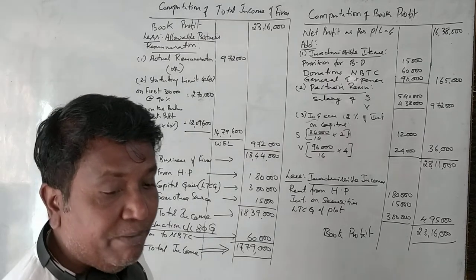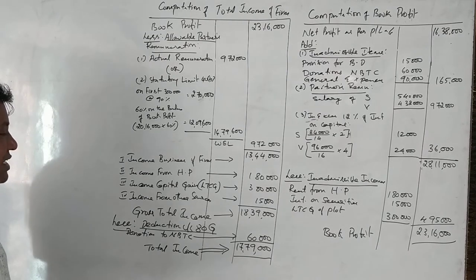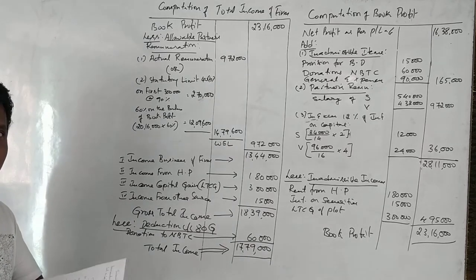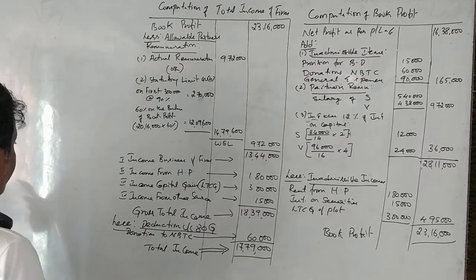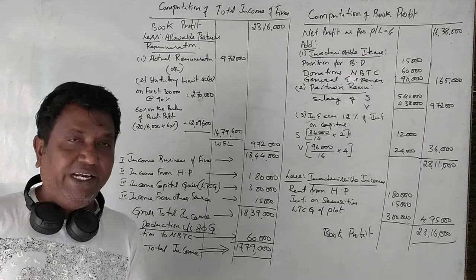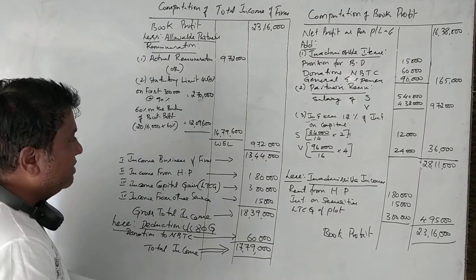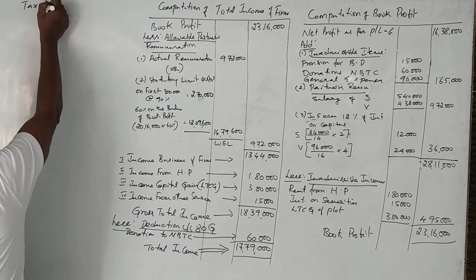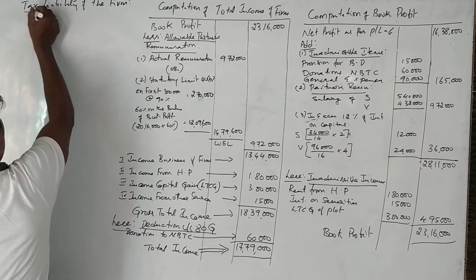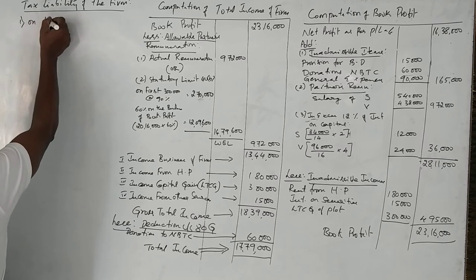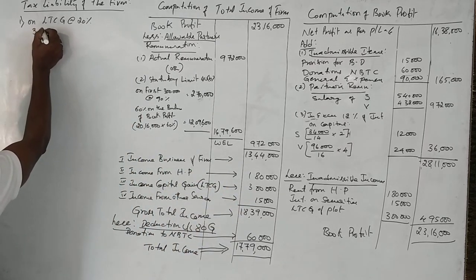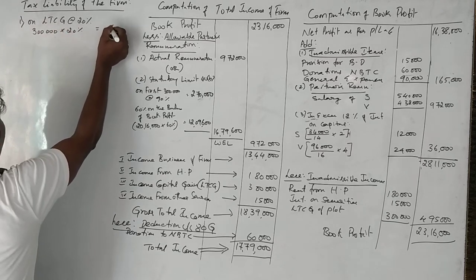Now let us find the tax liability of the partnership firm. On total income we generally calculate 30%, but LTCG is taxed separately at 20%. So we first calculate tax on LTCG: ₹3,00,000 at 20% = ₹60,000.